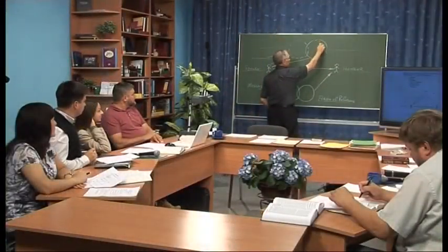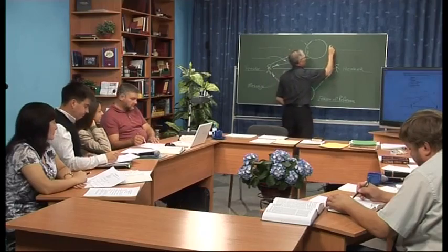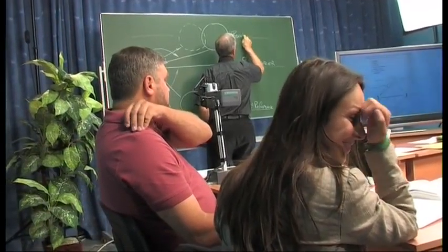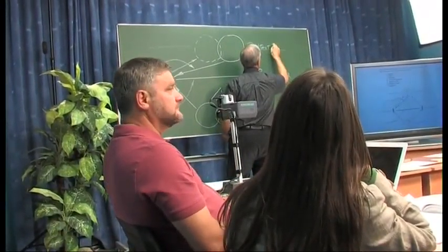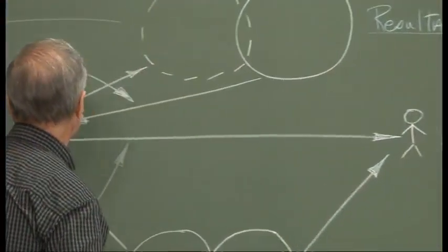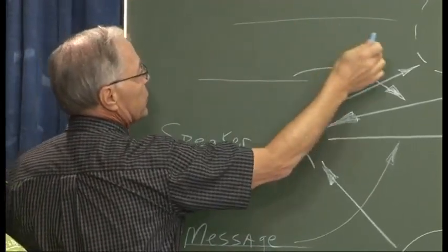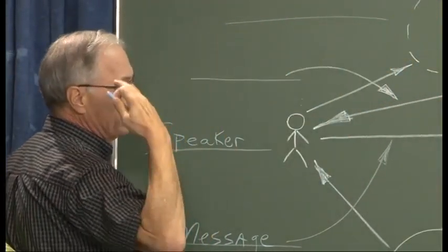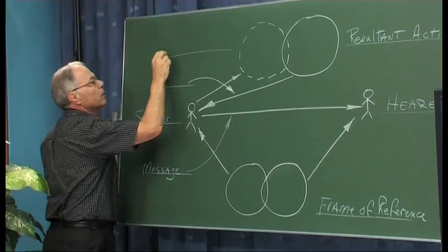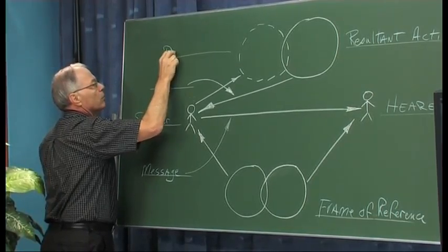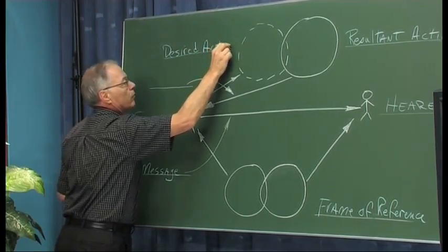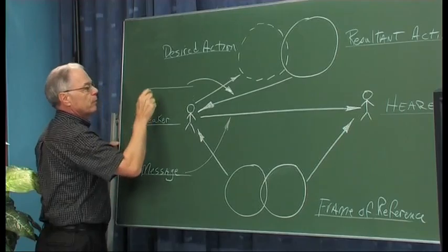And the solid circle? Result in action — everybody agree? And then the desired action — so this is sort of what was in somebody's mind, that's why it's a dotted circle. And this last one? Feedback. What does feedback mean? Response, reaction, information coming back to you.